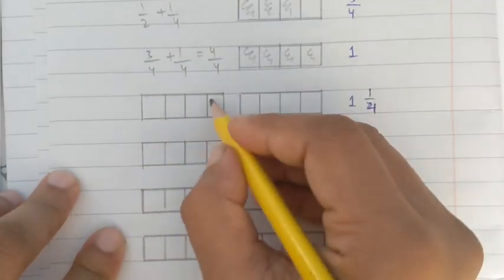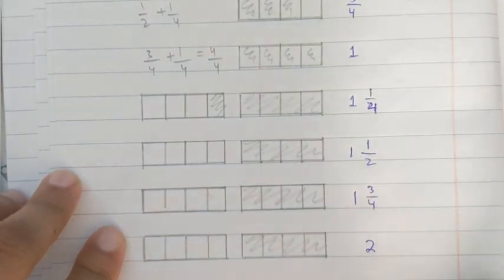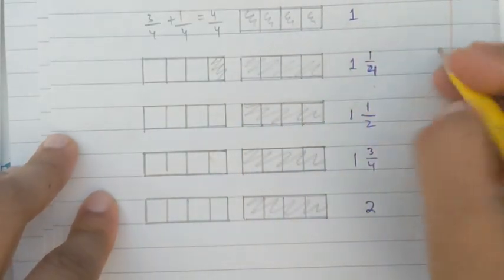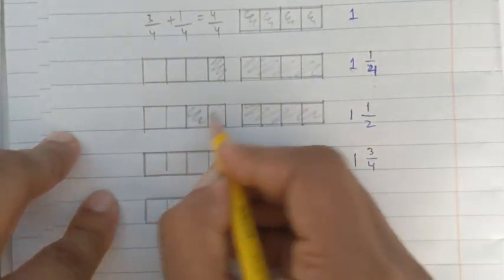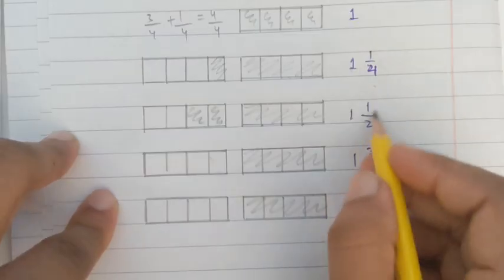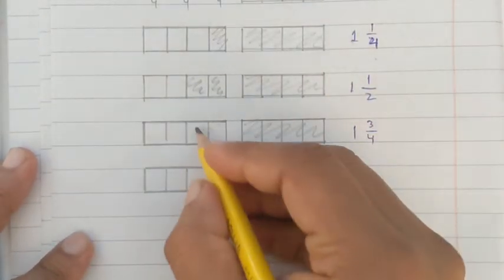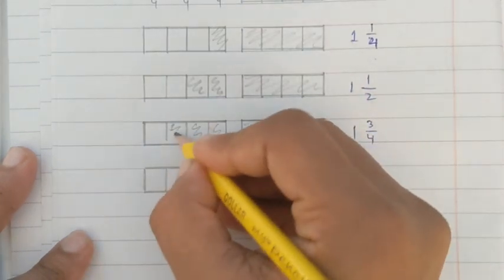After completing one whole, when we add one more 1/4, we take another whole and shade one part. So it becomes 1 whole and 1/4. Then 1 whole 1/4 plus 1/4 gives 1 whole 2/4, which equals 1 whole 1/2. Then adding another 1/4 gives 1 whole 3/4, because 1 whole 1/2 plus 1/4 equals 1 whole 3/4.